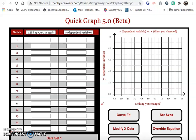This video will go through how to use the quick graph tool from thephysicsaviary.com. As you can see here we have two columns, our x-axis which would be our independent variable and our y-axis, the variable that depends on the independent variable.